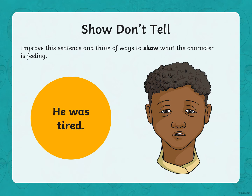I want you to have a go now in your books. Put today's date. Learning objective: we will use show, don't tell. Write this simple sentence: 'He was tired.' Then underneath, think of a sentence showing the reader that he was tired. What might you do when you are tired? How might you act? How might you feel? Have a go at improving that sentence. You may want to pause the video while you do that.